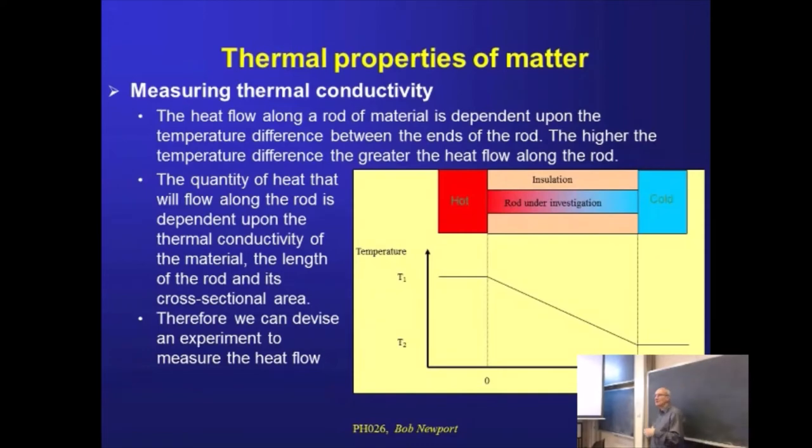It'll also depend on the material itself, how good a thermal conductor is it. If we make this out of copper, it's going to behave significantly differently to this material being made out of plastic or wood or something like that. So intrinsic to the material as well is this property, conductivity, that will change the rate at which we can get heat energy along.